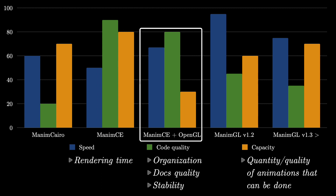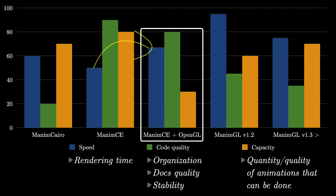The version of Manim CE with OpenGL is, in general, faster than Manim CE with Cairo, but in some occasions it can be slower — it all depends on the type of animations. The problem with this version is that not all the features of Manim CE with Cairo are available for OpenGL, so the variety of animations that can be done is reduced a lot. However, this is the most promising version of all. If the community manages to create a stable and optimized version of Manim CE with OpenGL, it will undoubtedly become the definitive version of Manim.